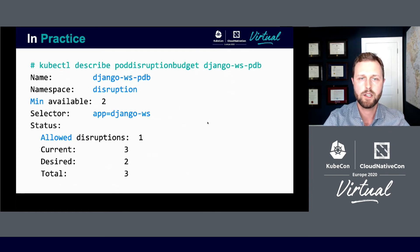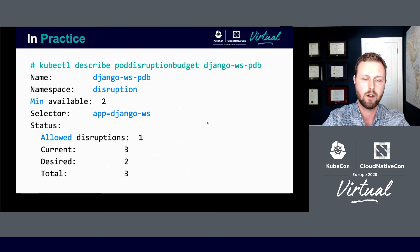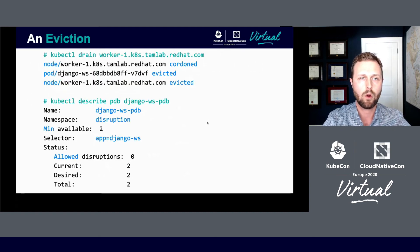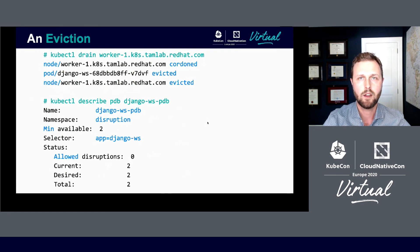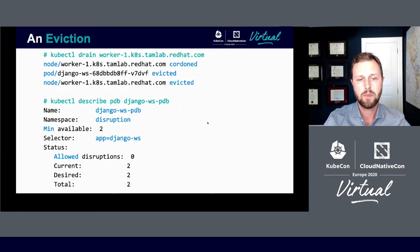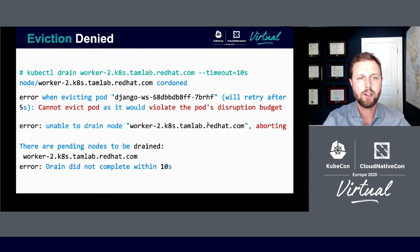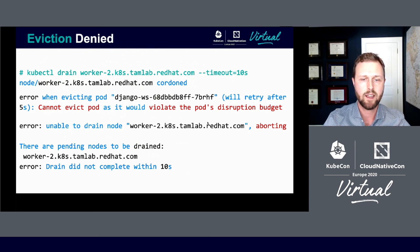In practice, pod disruption budgets look as follows. You can see currently we have three pods. Our desired or min available is two, meaning we have an allowed disruption of one. If we go ahead and drain our first worker, you can see the node is cordoned, our pod Django WS is evicted, and then the drain is completed. Looking back at our disruption budget object, you can see our current is now two, our desired is two, meaning our allowed disruptions is now zero — we can no longer tolerate any more pods being deleted. If we try to drain a second worker where another one of those Django pods is running, you can see that it's going to fail because it would violate the pod disruption budget. Using a timeout of 10 seconds, we can see that the drain did not complete and we can reevaluate and try again.